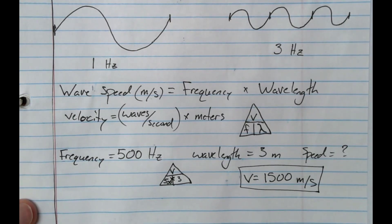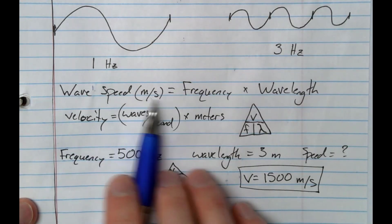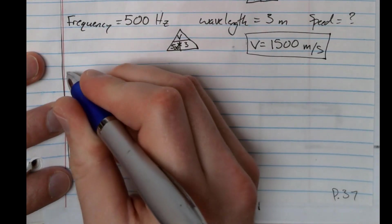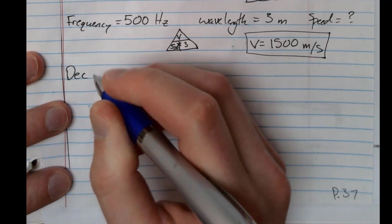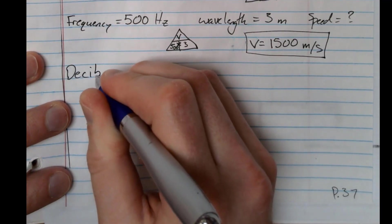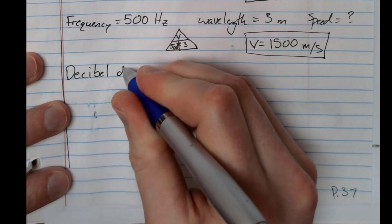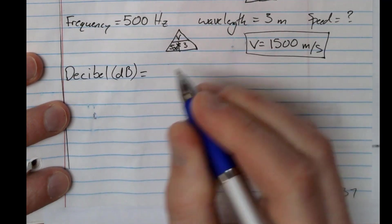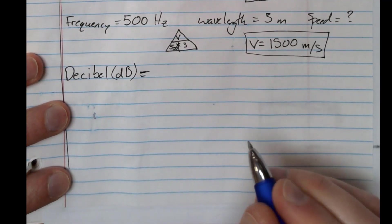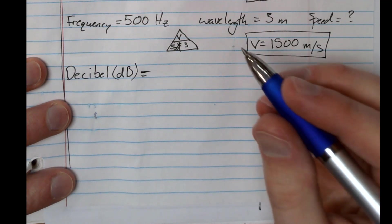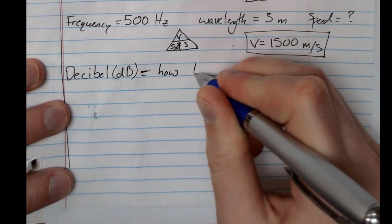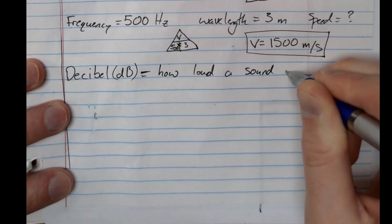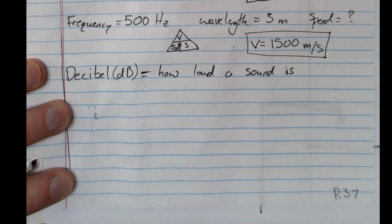Alright, so now with sound we have frequency, we've got wave speed, wavelength, all that stuff. But another thing that we can talk about is decibels. And you guys have probably heard of decibels. It's how loud a sound is. And we label that with a lowercase d and a capital B, which is a little weird. It's just how loud a sound is, that's how loud it is.